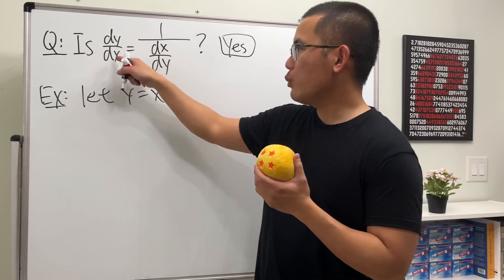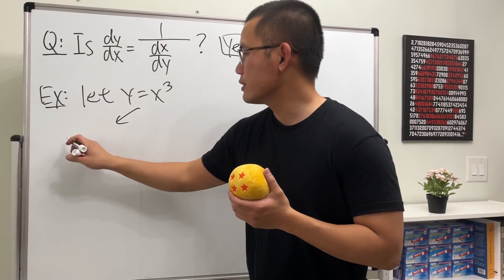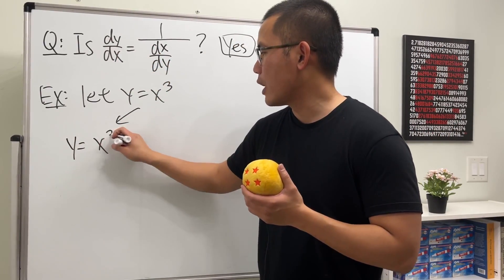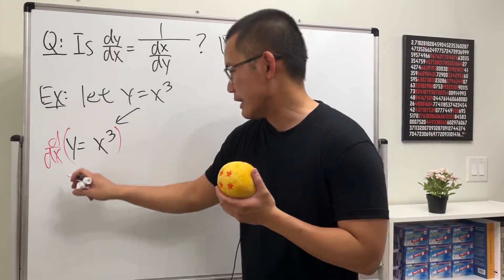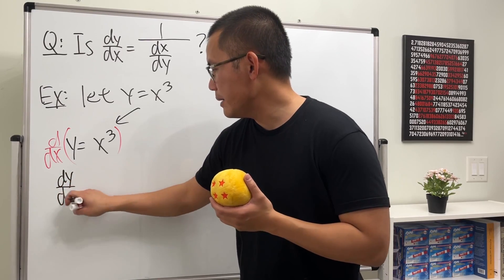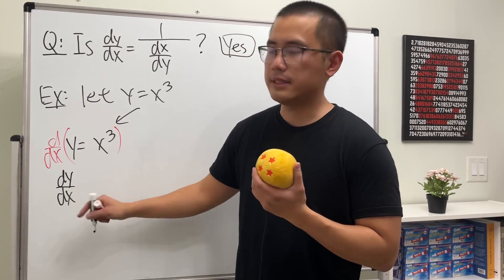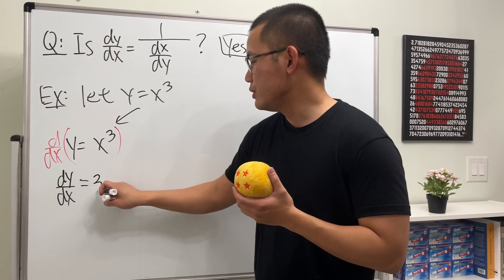To get dy/dx, we write down y equals x to the third power and differentiate this with respect to x the regular way. On the left hand side we get dy/dx, the derivative of y with respect to x. On the right hand side we just get 3x squared. Done.